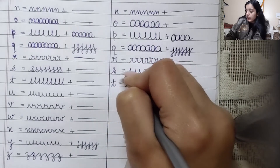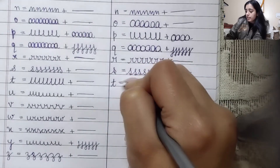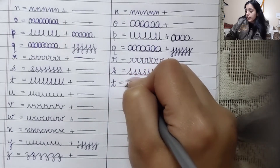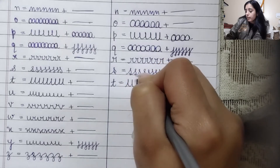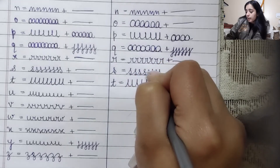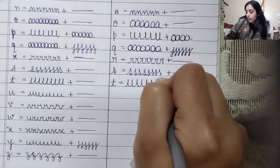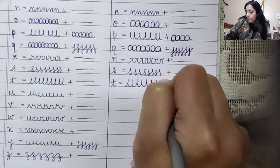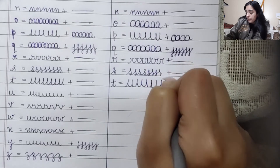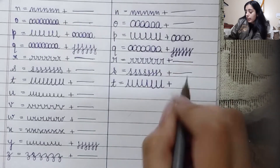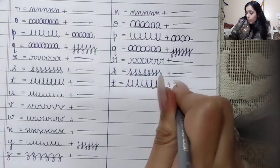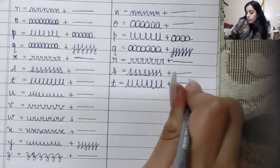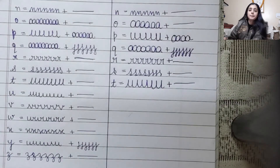For alphabet T, we'll practice drawing joined vertical lines. Make sure, as always, it goes in a straight line.